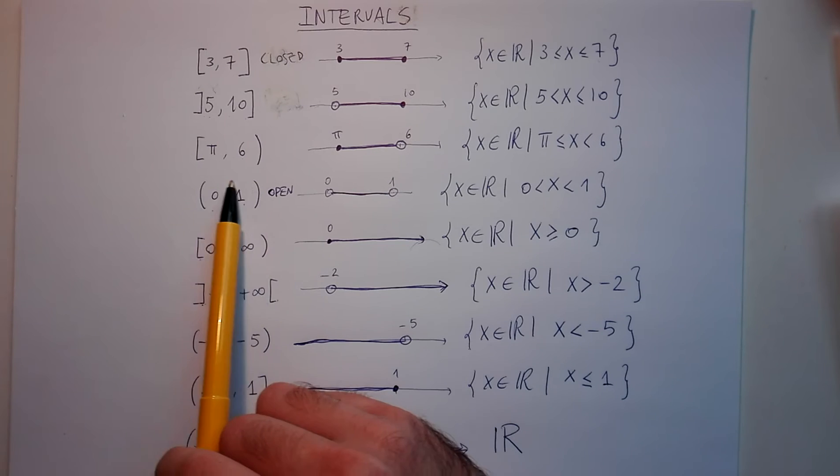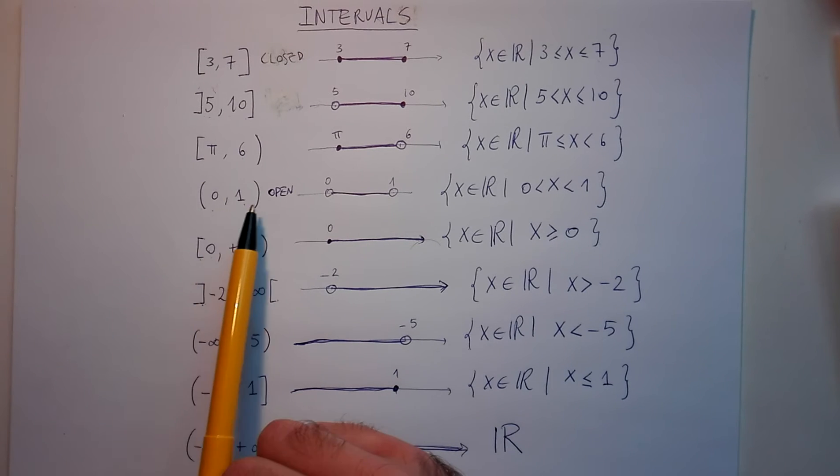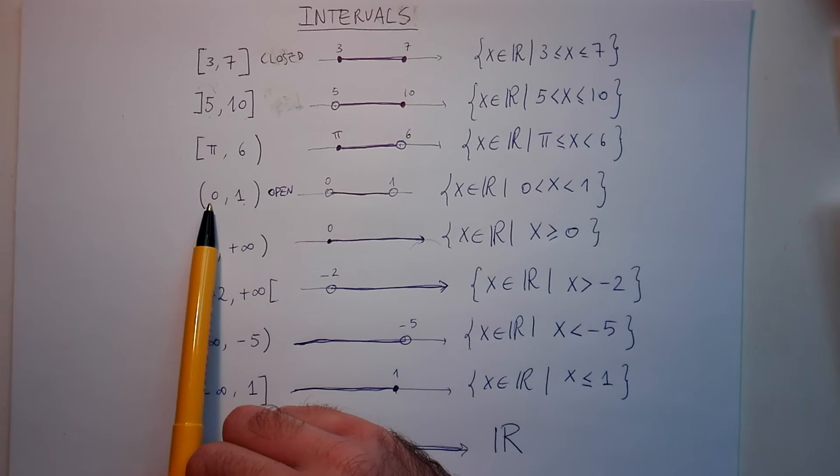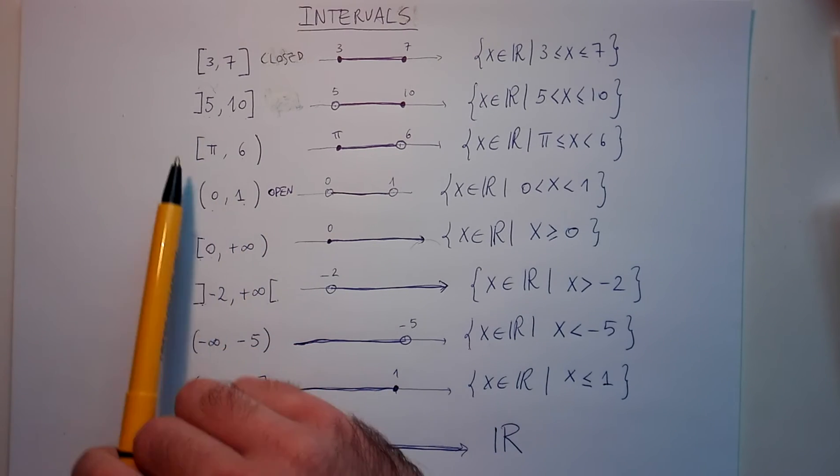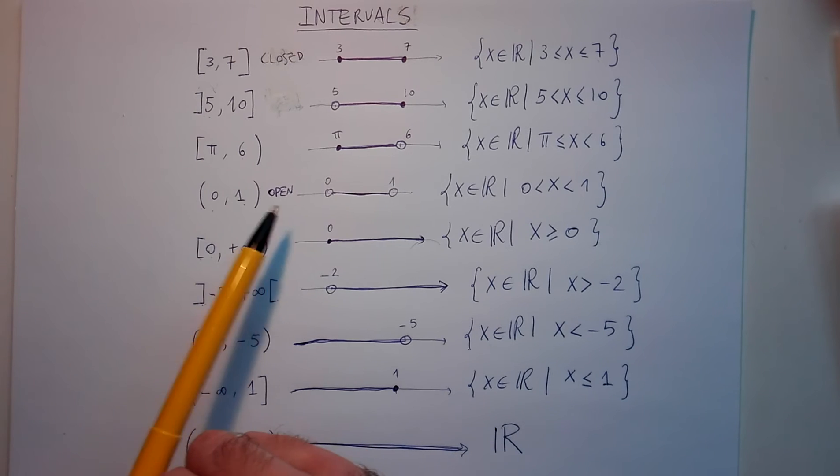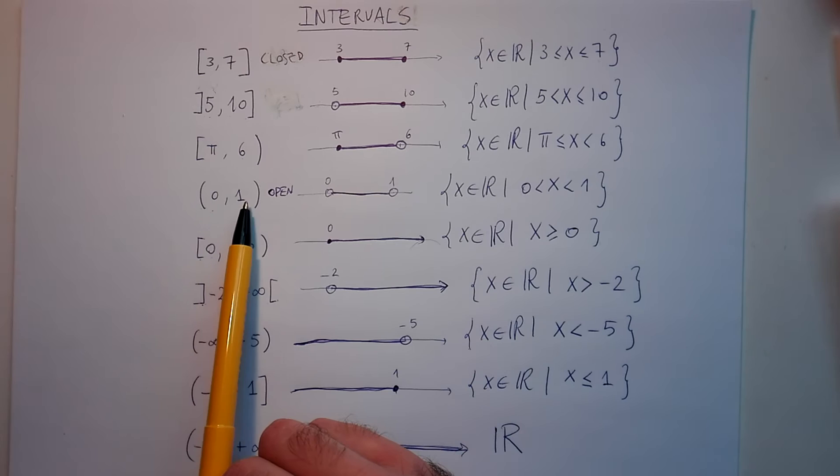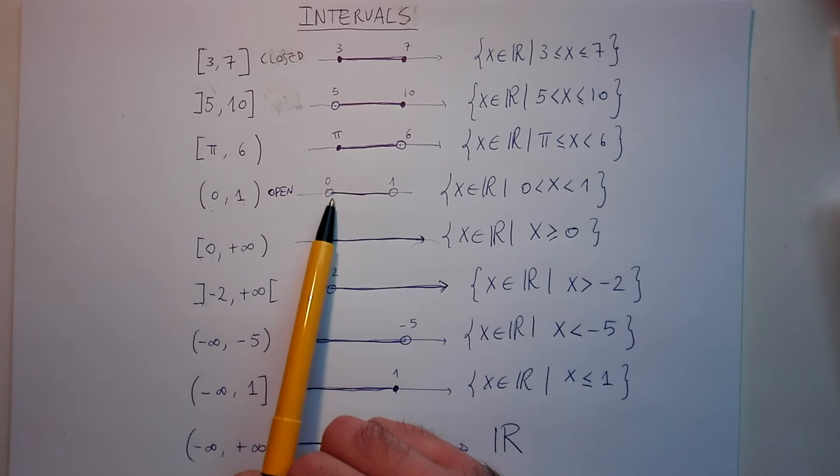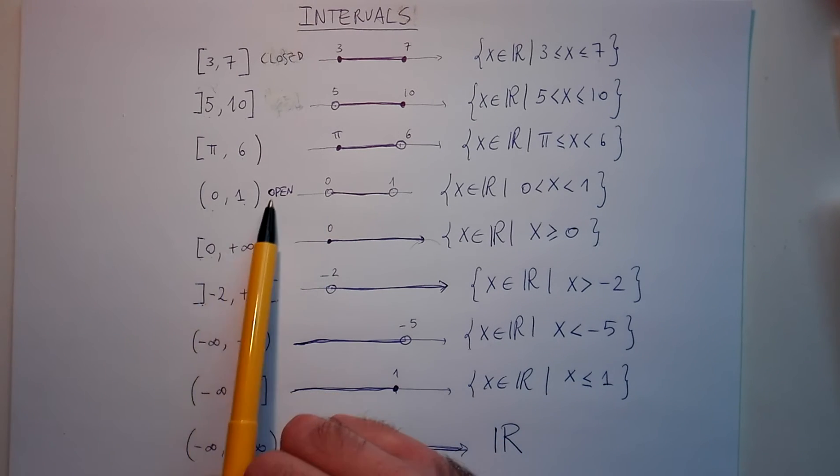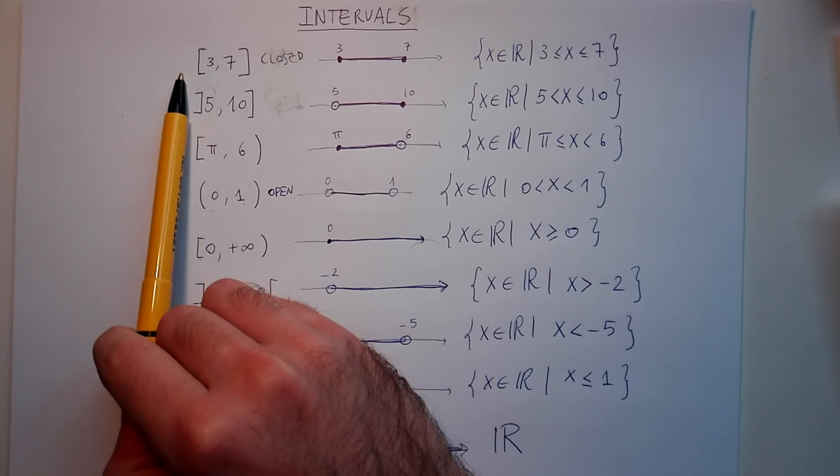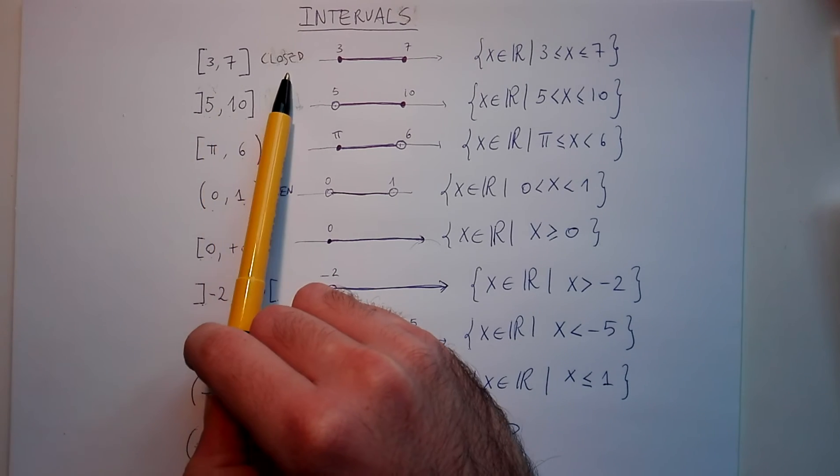Then if you do not include both ends, you can write with normal parenthesis or with square brackets pointing outwards. So this set is all numbers between zero and one, excluded. When you exclude both ends, this is called an open set. When you include both ends, this is called a closed set.